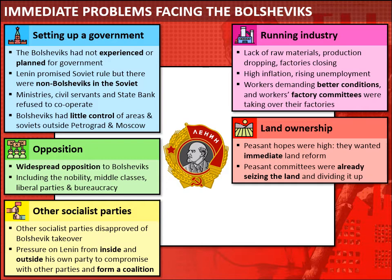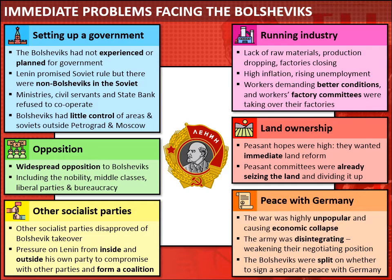Lastly, the Bolsheviks faced the problem of delivering on their promise to end the war. The war was highly unpopular and was causing economic collapse in Russia. The Bolsheviks had promised to end it immediately, but the disintegrating Russian army put them in a very weak negotiating position with the Germans. The Bolshevik party itself was also split — some saw the war as an opportunity to spread the revolution to Germany and wanted to carry on fighting.